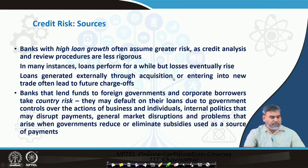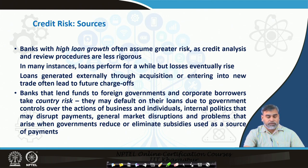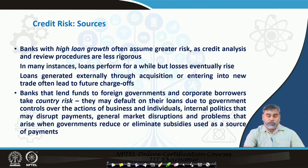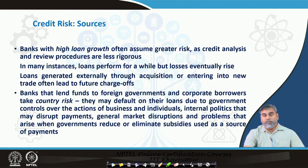Sometimes banks lend to foreign governments and corporate borrowers with exposure to external markets. In that case, if something goes wrong in the international scenario, banks are exposed to more credit risk due to government controls, internal politics, and country risk. Political instability, general market disruptions, and a globalized, highly integrated economy mean banks are also exposed to greater credit risk from international sources.